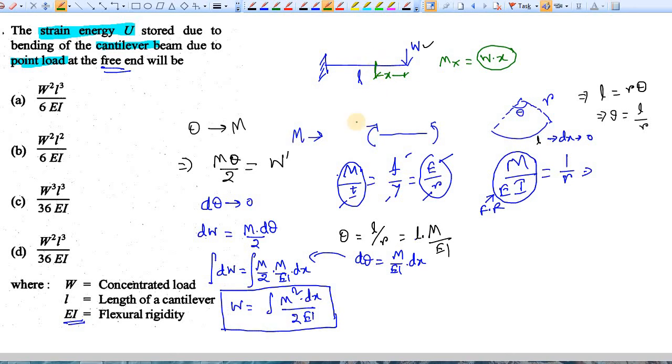So here, what is the moment M(x)? It's simply W times x. So you have got the value of moment at this section. Now apply it here in this equation. Your work done is coming as integration from 0 to l: W x squared times dx divided by 2EI.